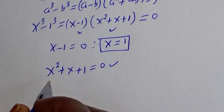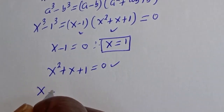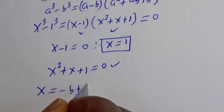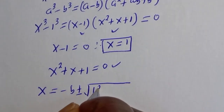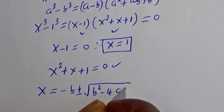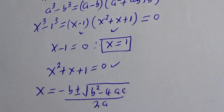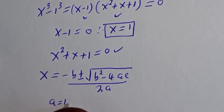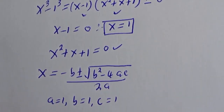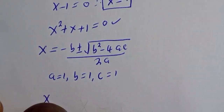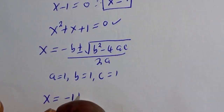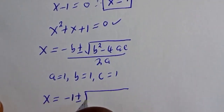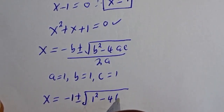From the second sub-case, s squared plus s plus 1 is equal to 0. This is a quadratic equation which can be solved using the quadratic general formula. The quadratic formula is s equals minus b plus or minus square root of b squared minus 4ac over 2a. From this equation, a is equal to 1, b is equal to 1, c is equal to 1. Let's substitute.